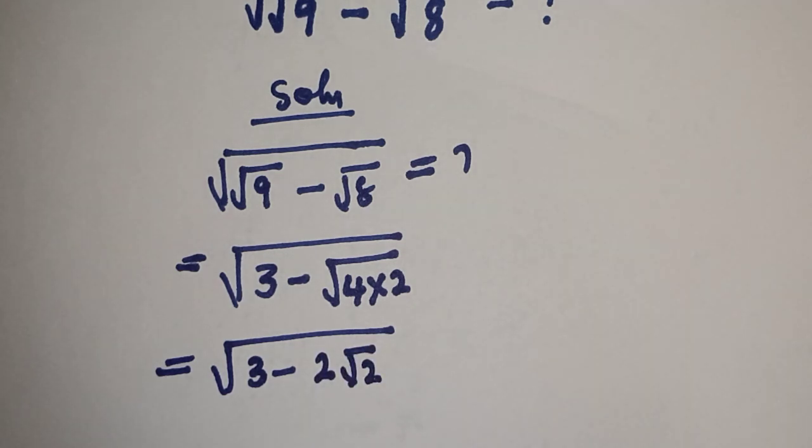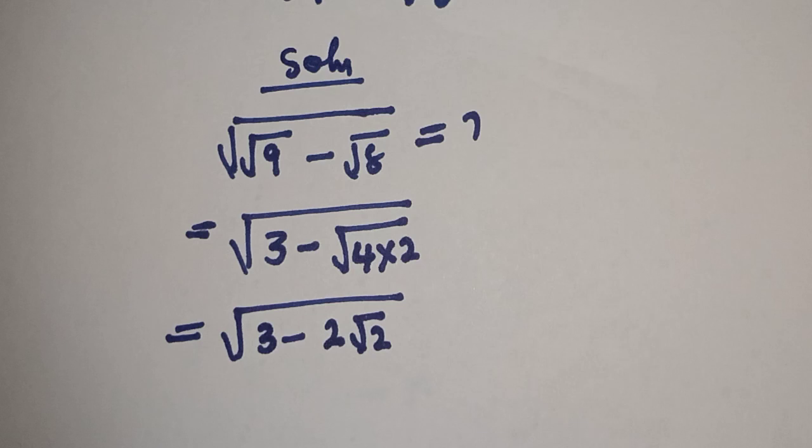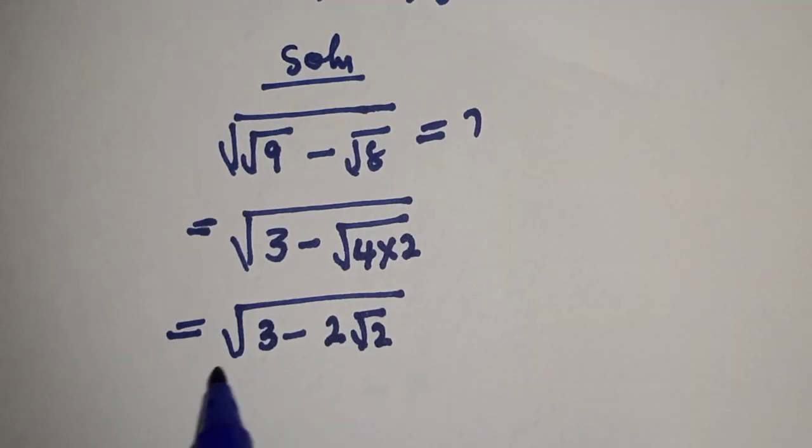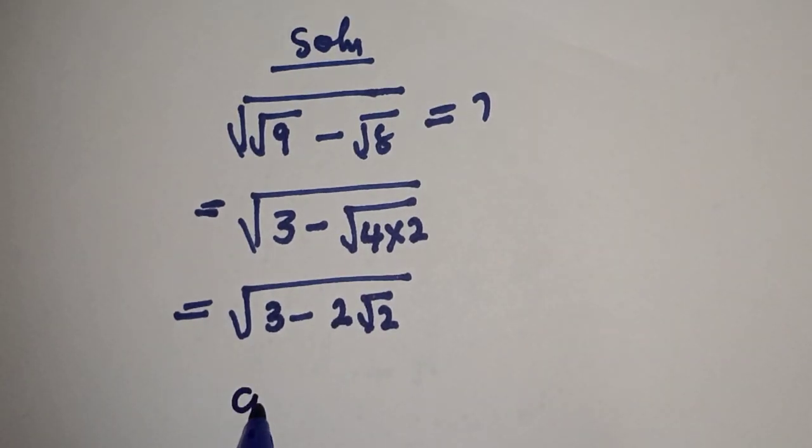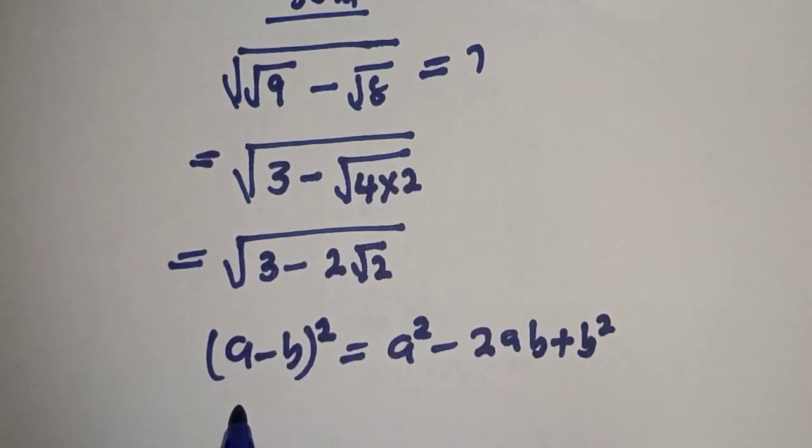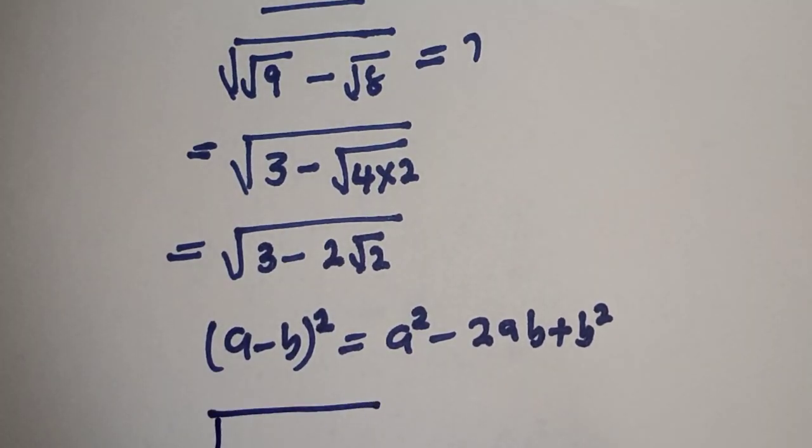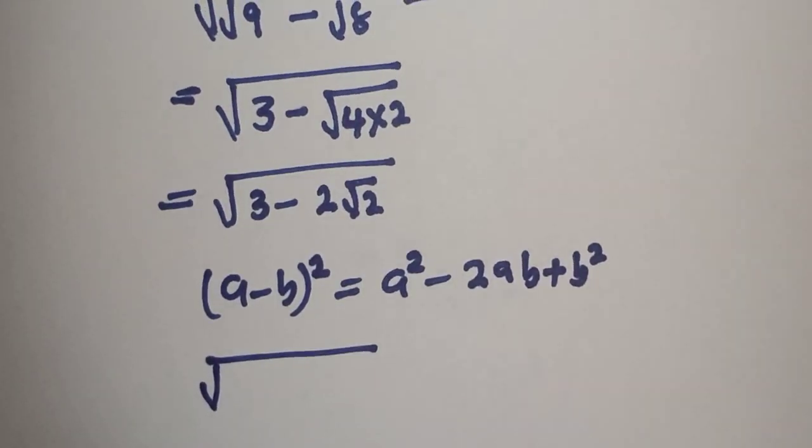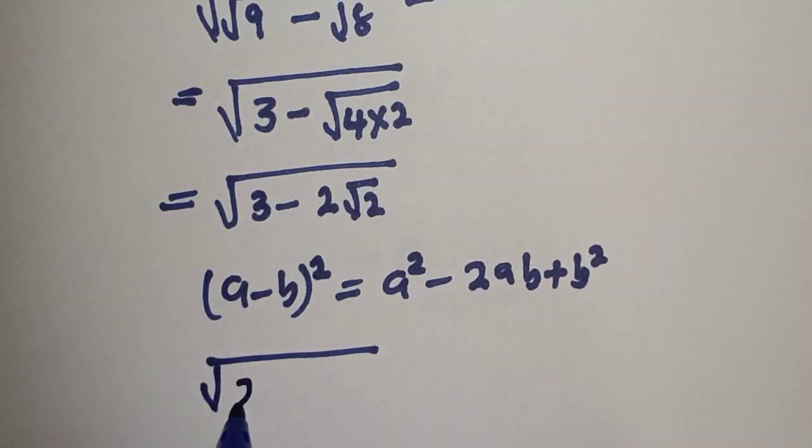Then note that if you have a minus b square, this is equal to a square minus 2ab plus b square. And this can be written as square root of, 3 is 2 plus 1, minus 2 root 2.